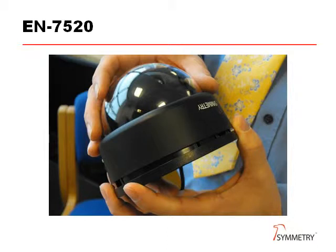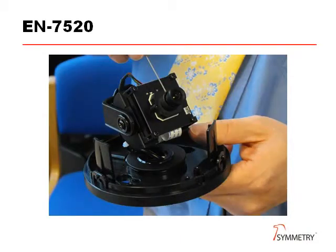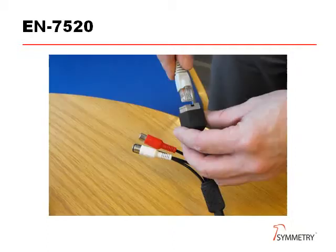The dome is locked in place until the outer ring is rotated. It can then be removed to access the lens. When focus is set, it is locked in place with the Allen key provided, to ensure that it cannot move when the cover is replaced. The connections for power and Ethernet are available on flying leads.